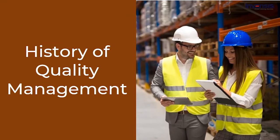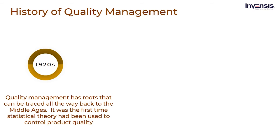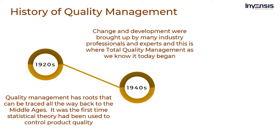Quality management has roots that can be traced all the way back to the Middle Ages. Some research says that traits of quality management were found in the 1920s. It was the first time statistical theory had been used to control product quality. To verify that each element followed specified standards and rules, they began measuring, evaluating, and testing the products, processes, and services against precise specifications. Soon after this, in the year 1940, change and development were brought up by many industry professionals and experts. This is where total quality management as we know it today began.